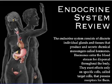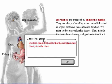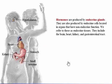For simplicity, the endocrine glands and tissues that are common to both males and females are shown only on the female figure. Hormones are produced by endocrine glands. They are also produced by endocrine cells located in organs that have non-endocrine function. We refer to these as endocrine tissues.